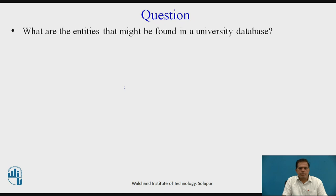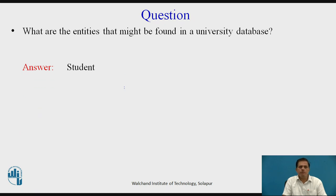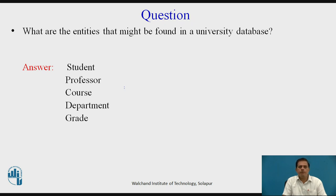After studying these concepts, we move to a practice question. The question is: what are the entities that might be found in a university database? You need to identify only the entities that exist in a university database. The answer is: first, student; second, professor; third, course; fourth, department; and fifth, grade. These are all the entities that might be found in a university database.